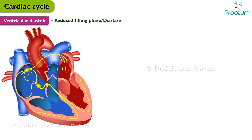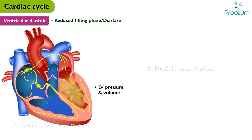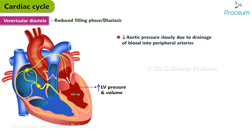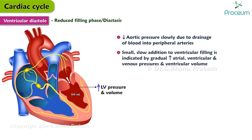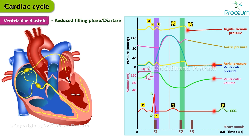Reduced filling phase or diastasis. This is a period of slow ventricular filling whose duration depends on heart rate. Left ventricular pressure and volume slowly increase due to slow filling. Aortic pressure decreases slowly due to drainage of blood into the peripheral arteries. This slow addition to ventricular filling is indicated by gradual rises in atrial, ventricular, and venous pressures and in ventricular volume. The end of the isoelectric TP segment is recorded on the EKG.